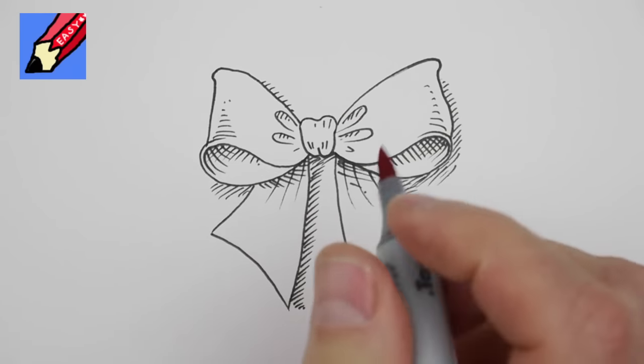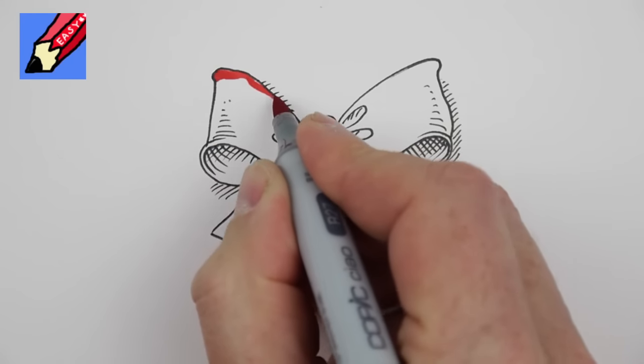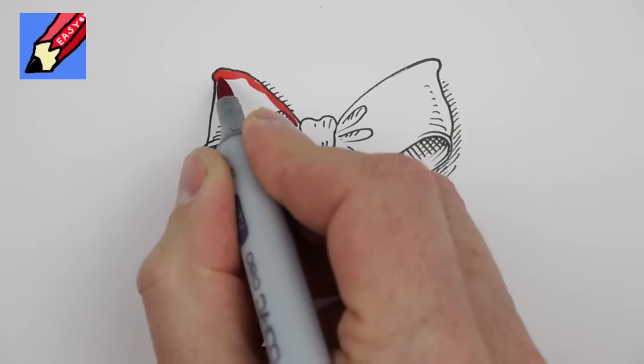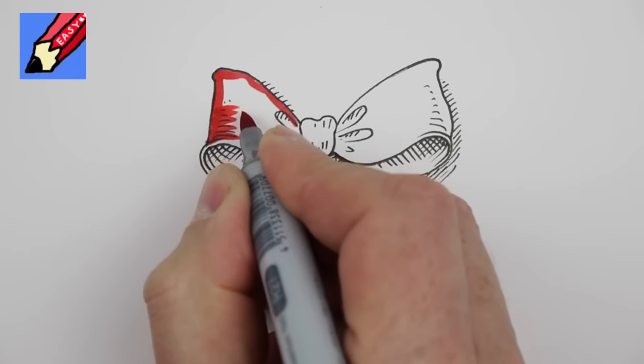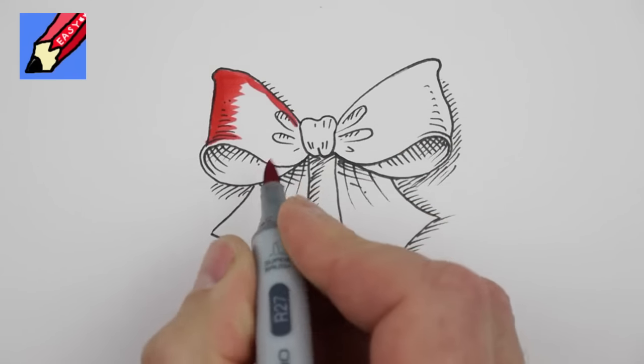And then all you need to do is color it in. If it's going to be a Christmas bow, you probably want a nice red. I'm using Copic markers here and you get this nice brush effect so you can flick those colors in like that.